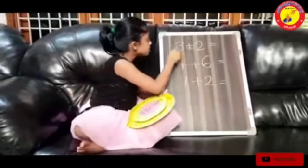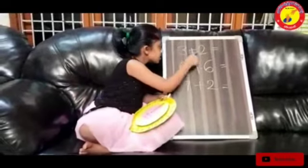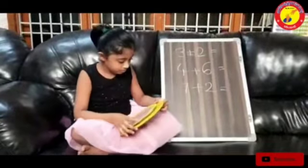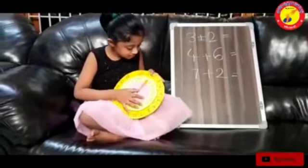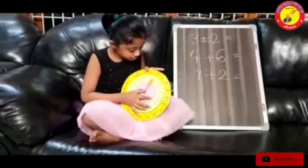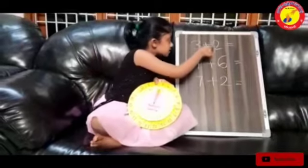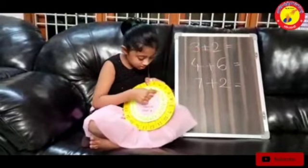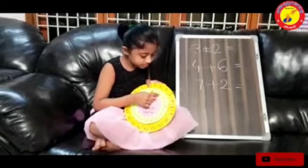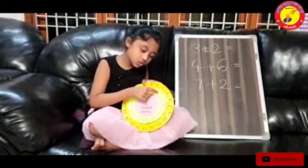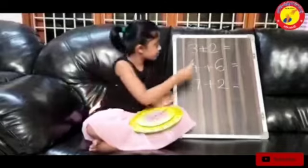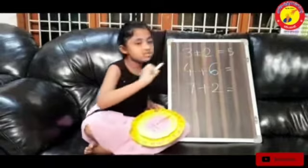The first problem is 3 plus 2. We have to do this arrow near 3, and see where is 2 in this circle? The 2 is here. So the answer is 5. 3 plus 2 is equal to 5. The first problem is solved.